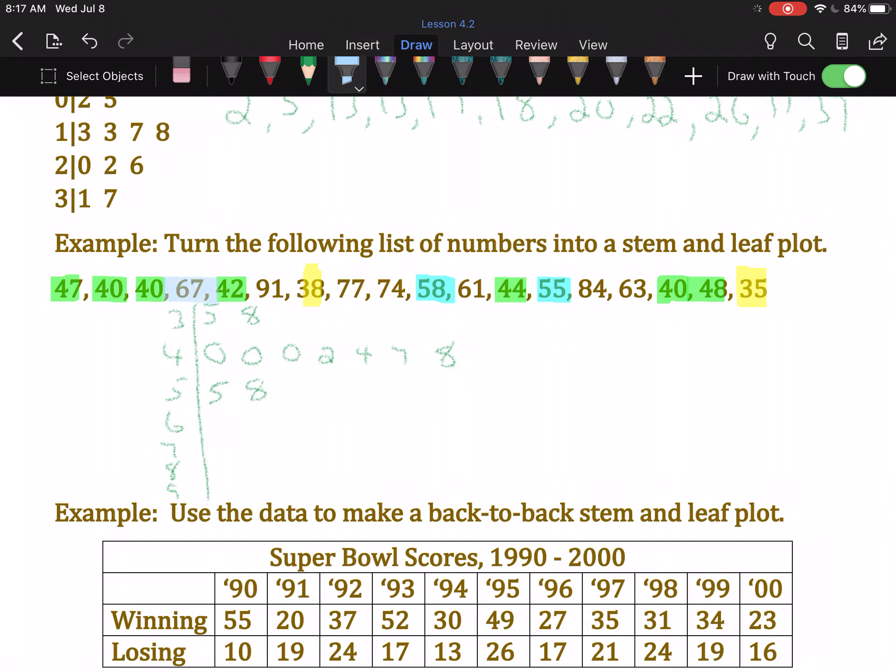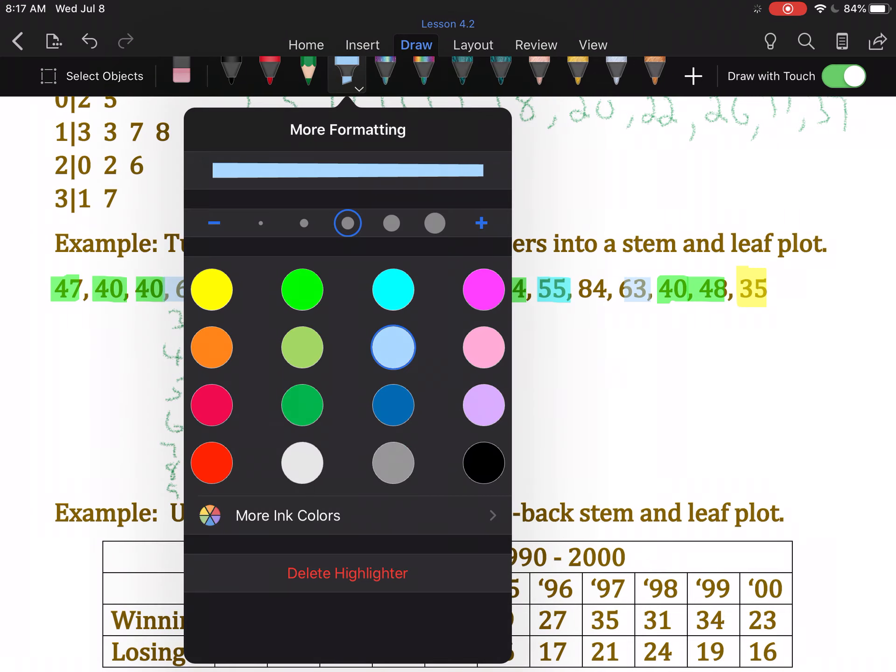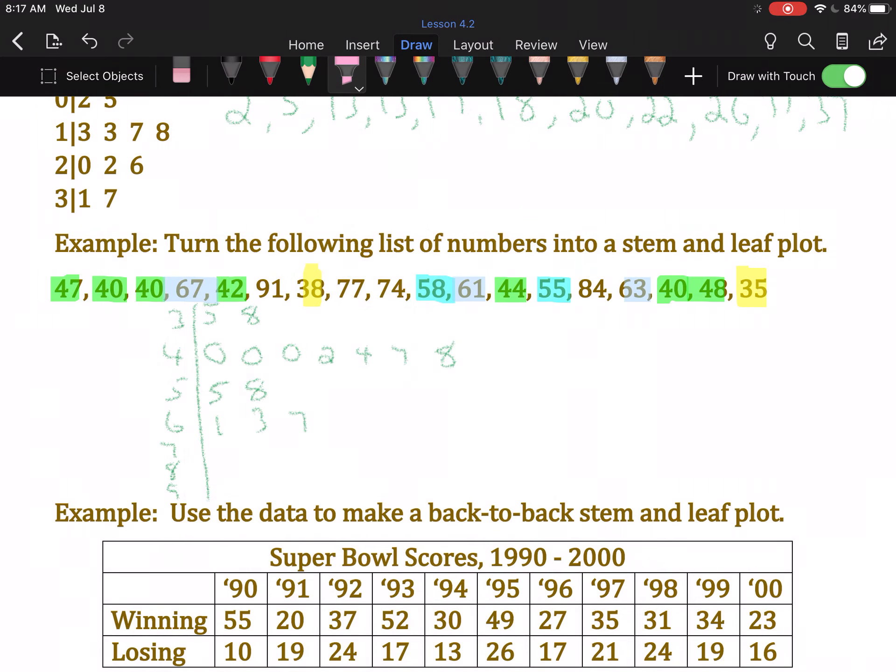60s. We've got 67, 61, and 63. So we put those in order for 61, 63, and 67. 70s. We have 77 and 74. So we'll put those in order. We'll put 74 and 77.